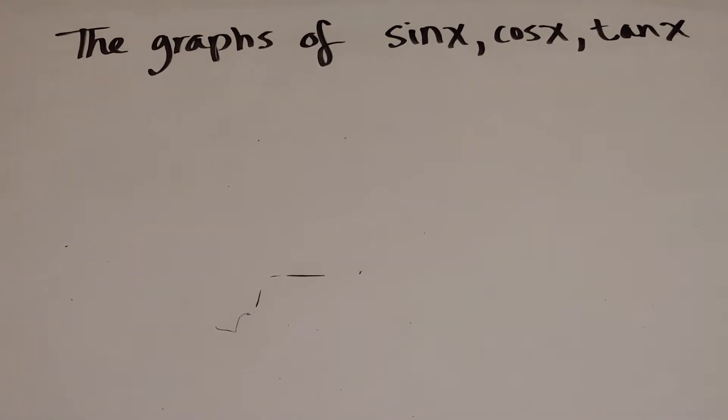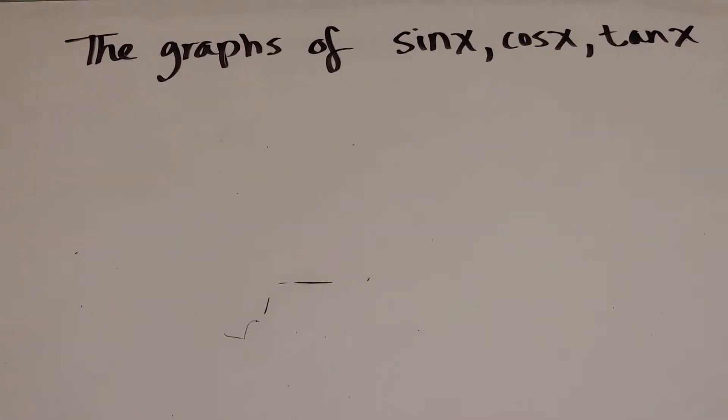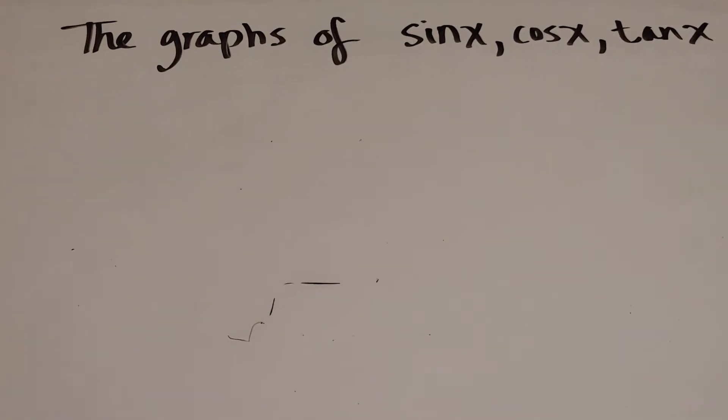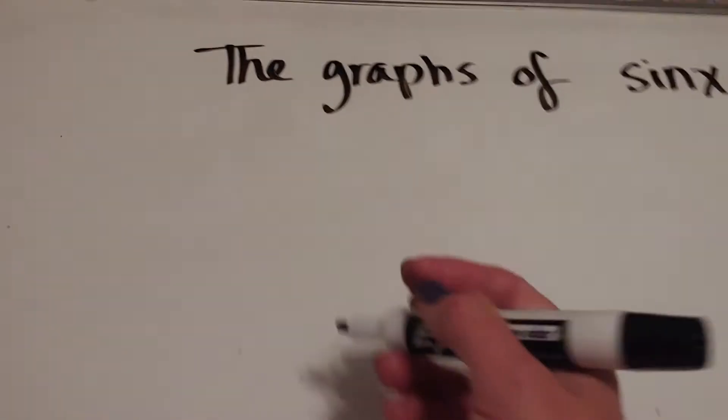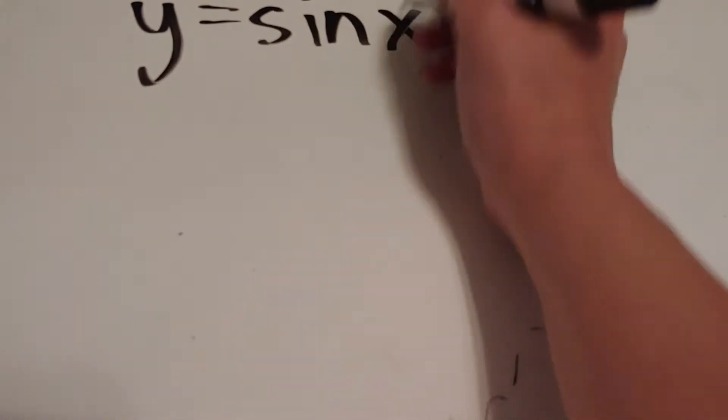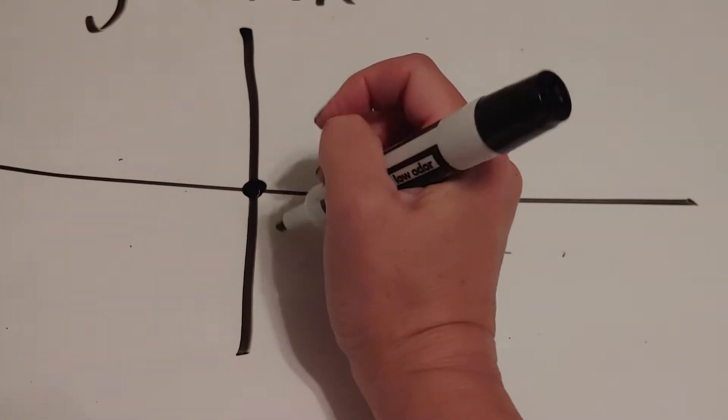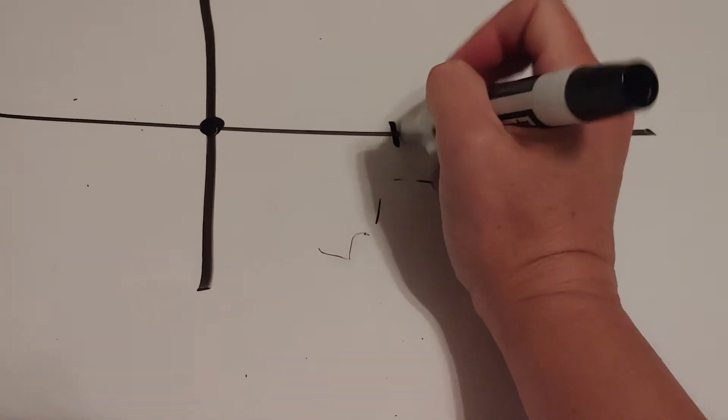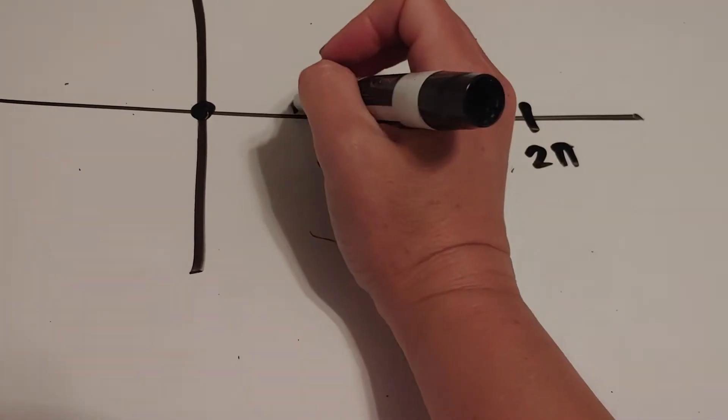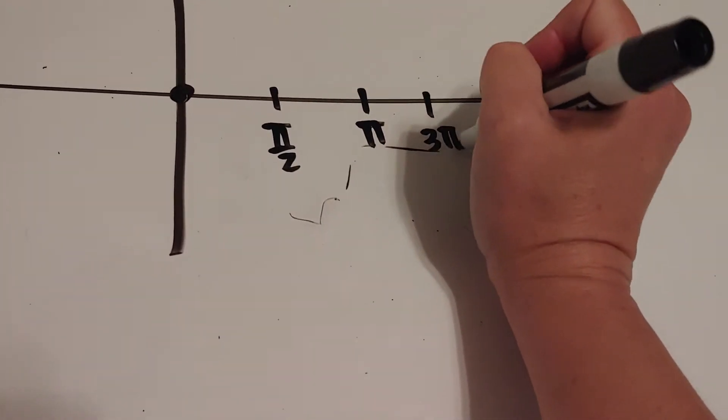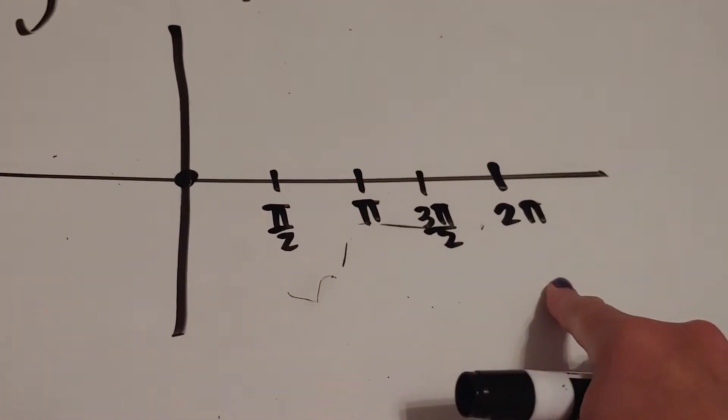You could graph all of these in Desmos—y equals sine x, y equals cosine x, y equals tan x—but I want to just give you the gist of it. For sine x, it's got a period of 2π. Typically when we draw it, we draw it from x is 0 to 2π. Halfway would be π, halfway in between that is π/2, and this is 3π/2. These are going to be our four points.